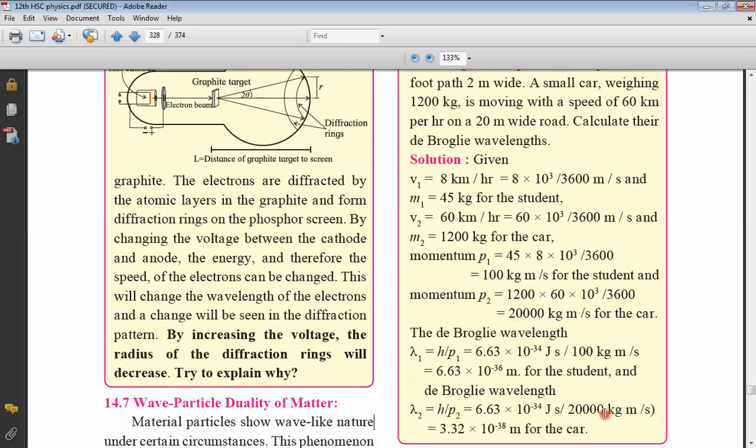And the de Broglie wavelength, please see. The de Broglie wavelength is given by lambda equal to H upon P, which is H is Planck's constant, P is momentum of that body. So lambda 1, for car, sorry, my mistake. This is the de Broglie wavelength for student equal to H upon P1. P1 is momentum of student. H is Planck's constant, 6.63 into 10 raised to minus 34 joules second, divided by 100 kg meter per second. Please see, joules second, kg meter per second, all are SI, so lambda will be in meters. So it comes out to 6.63 into 10 raised to minus 36 meters for the student.